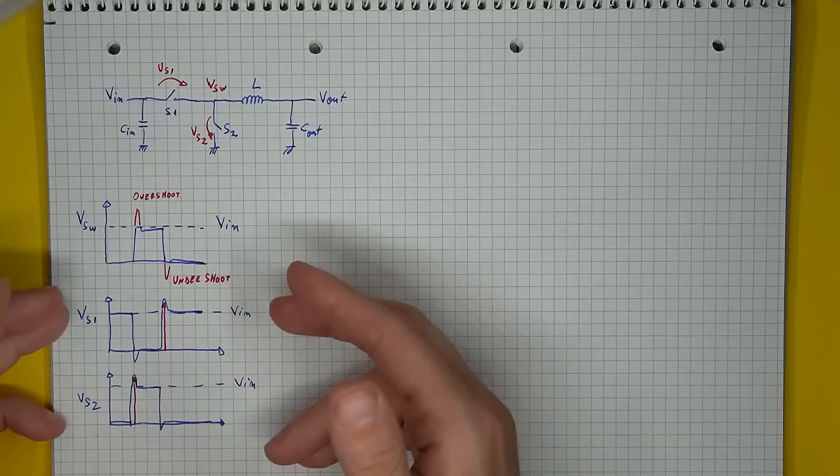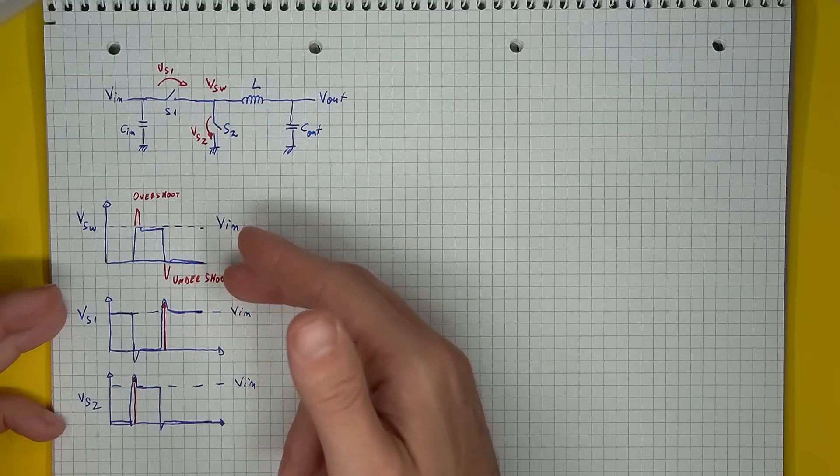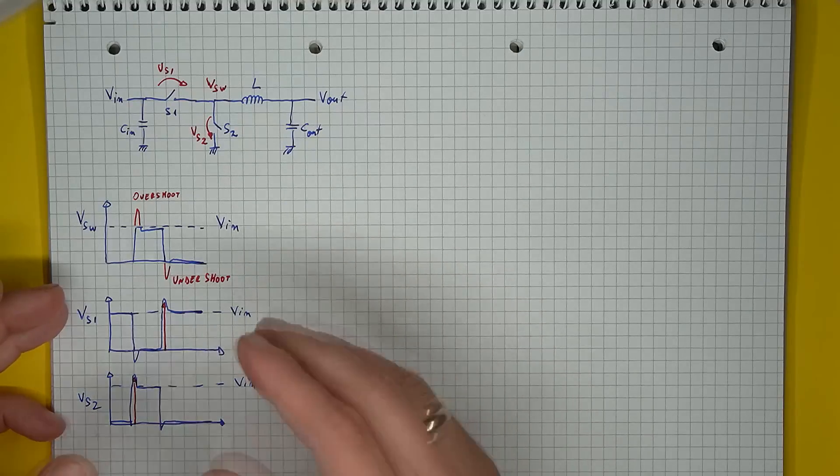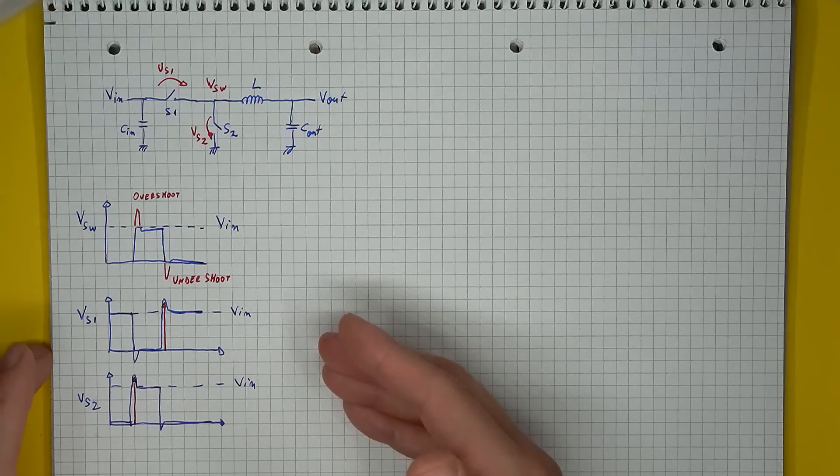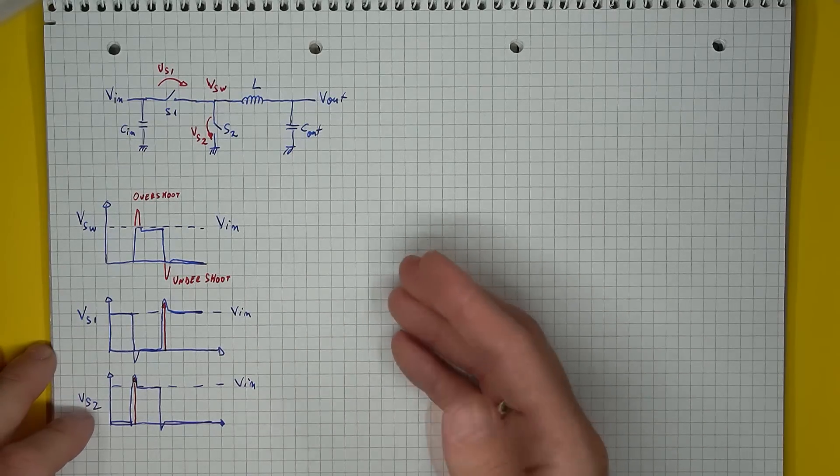The existence of the voltage spikes, the overshoot and undershoot in the switching node, means that your switch components are being exposed to higher than expected voltages. In other words, if these components were chosen strictly based on the theoretical voltages that you should be seeing, you might end up destroying the switches.